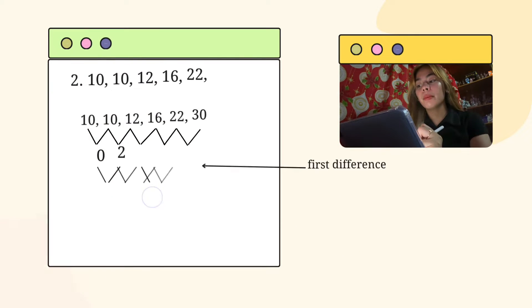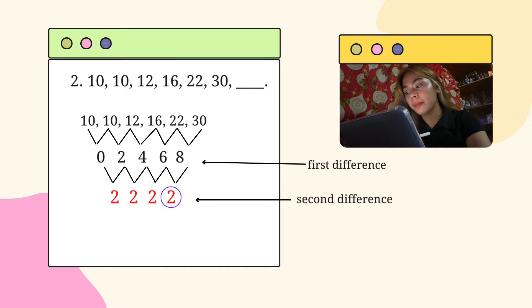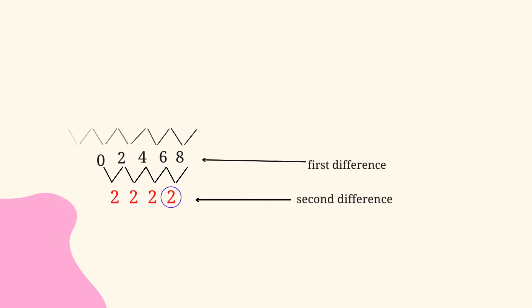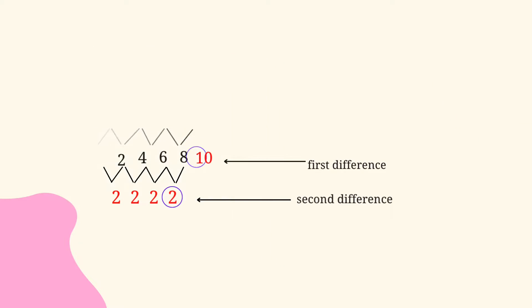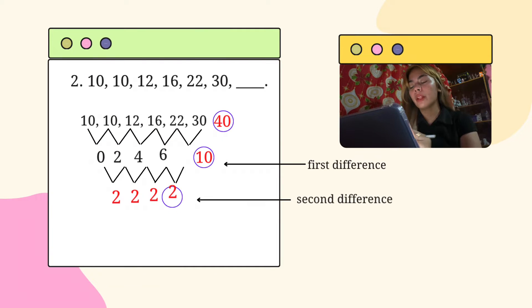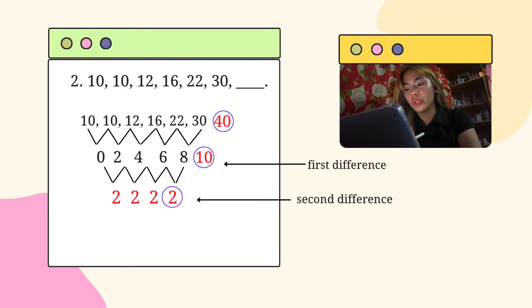Similarly to the first problem, we will simply add the second difference repeating term to the last term in the first difference. Subsequently, we will add the number that we got on the first difference to the last term in our problem in order to get the number 40.